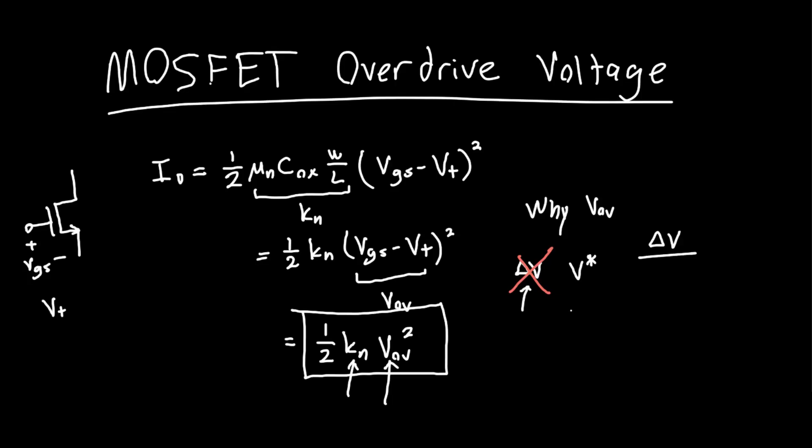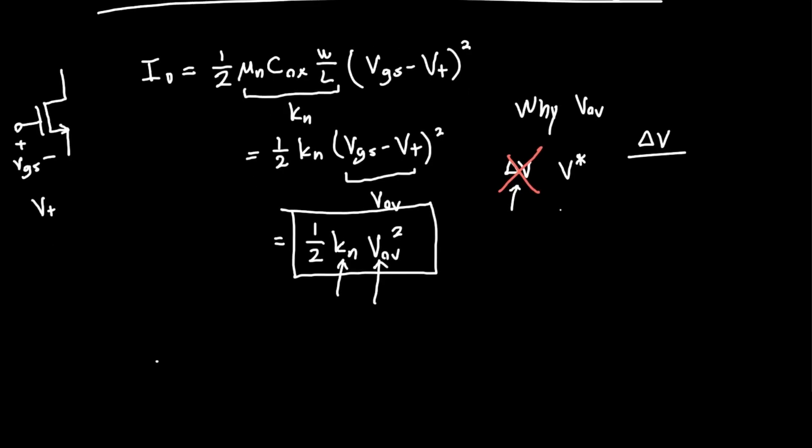But the reason why I like the overdrive voltage VOV so much is that it has a physical meaning. In this case, its physical meaning is just the voltage above the threshold voltage of the MOSFET.